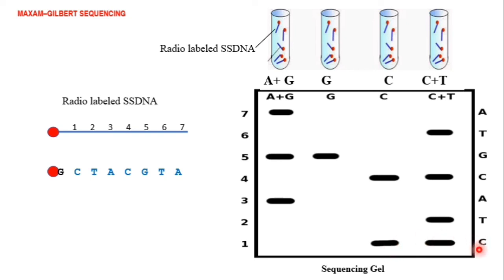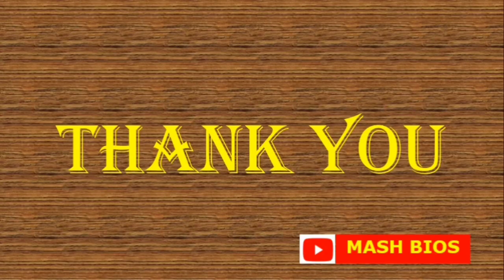So from this, we can read the sequence as C, T, A, C, G, T, A. This is the sequence determined by Maxim-Gilbert DNA sequencing. I hope you understood this DNA sequencing method. Thank you for listening.